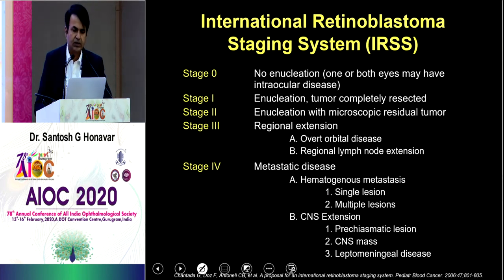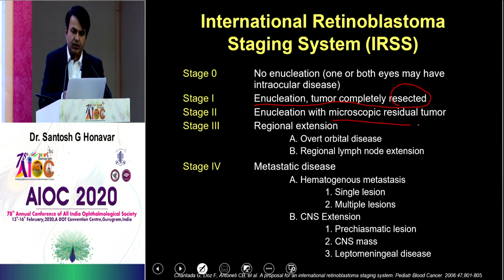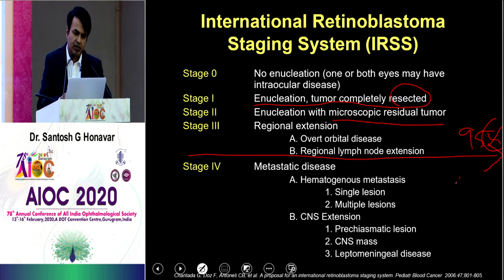In international staging of retinoblastoma: Stage 0 — no enucleation performed, managed conservatively. Stage 1 — enucleation performed, tumor completely resected (pathology's role is very important). If there is residual tumor at the optic nerve cut end or full-thickness sclera is involved, that is Stage 2 — microscopic residual tumor. Stage 3 is regional extension to orbit or regional lymph nodes. Stage 4 is metastatic retinoblastoma. Up to Stage 3 there is 95% survival; beyond Stage 3, less than 2% survival — so you should never let a child progress from Stage 3 to Stage 4.